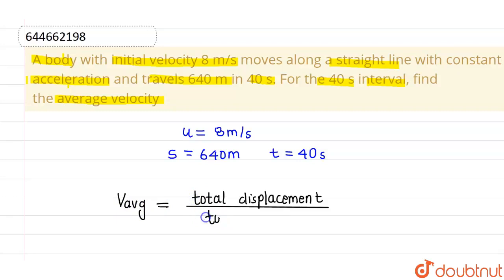Now, since we know that in a 1D motion, displacement and distance are equal, so this will be equals to: since total displacement is 640 meter and time required for this particular displacement is 40 seconds.